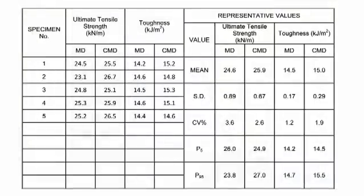The tensile strength is reported in kilonewtons per metre width to one decimal place. The elongation is reported in percentage to zero decimal places. Toughness is reported in kilojoules per square metre to one decimal point. The five specimens per direction are averaged to get a mean result for that sample.